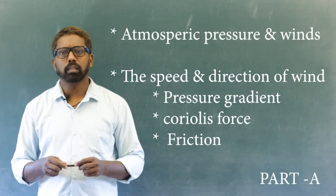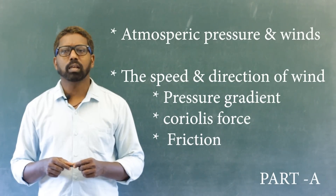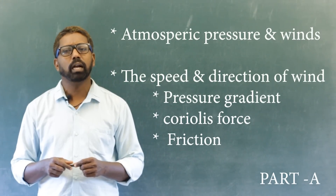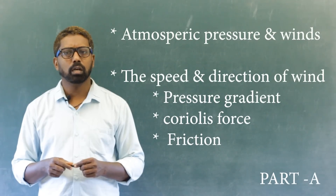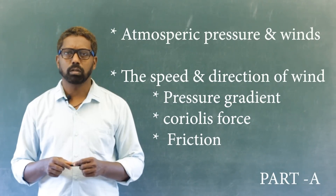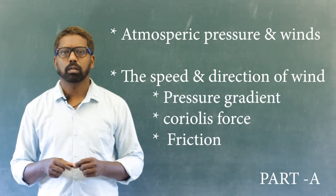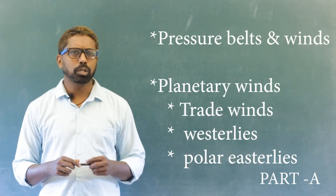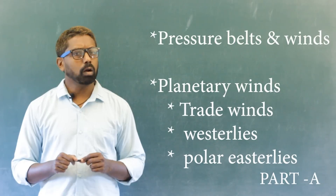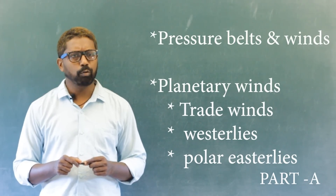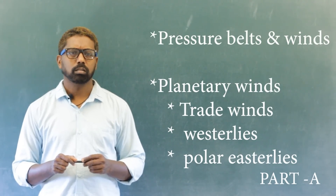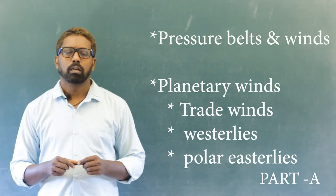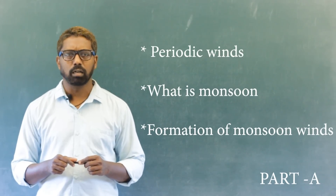Next: atmospheric pressure and wind. What are the factors that influence the speed and direction of wind? These include pressure gradient, Coriolis force, and friction. Another very important content is pressure belts and winds. Planetary winds are trade winds, westerlies, and polar easterlies.